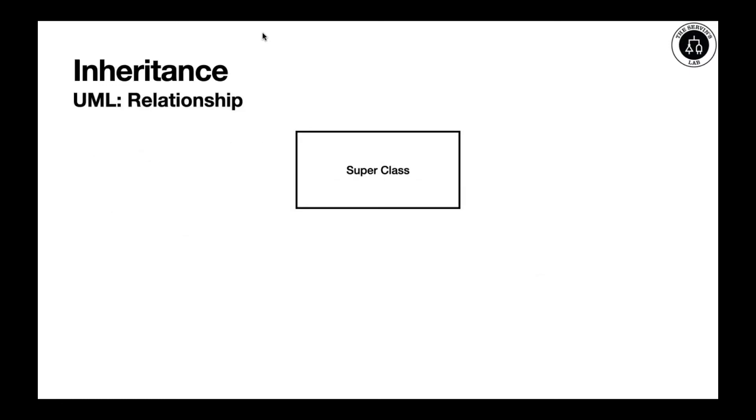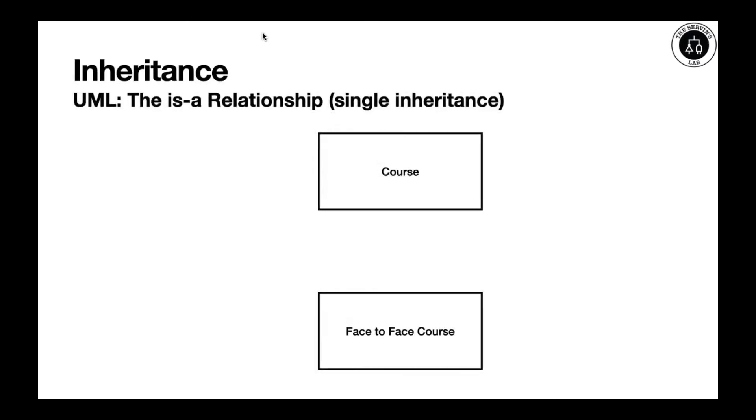You probably remember the relationship that we have in inheritance. We must have a superclass and a subclass. The feature here is that the subclass inherits attributes from the superclass and we denote it in a UML diagram by using this arrow. Remember that inheritance is considered to be an is-a relationship.